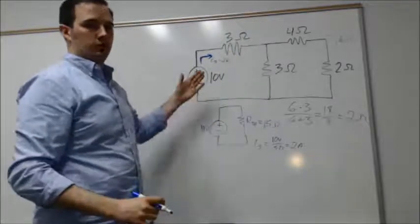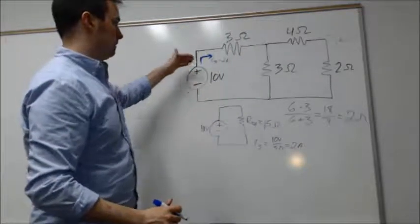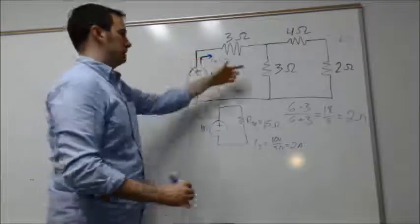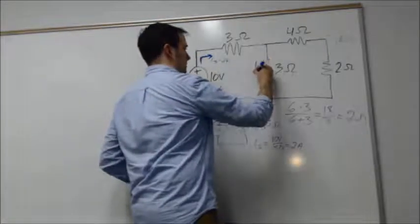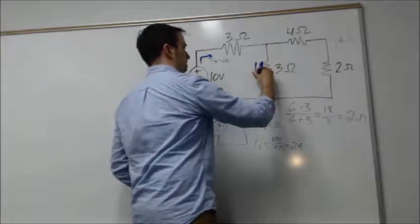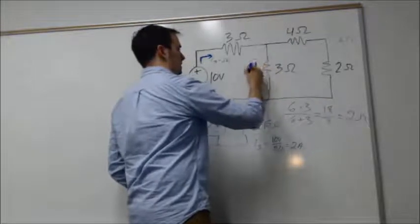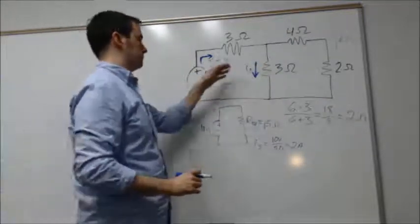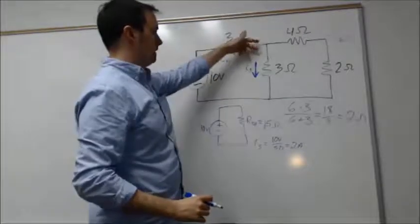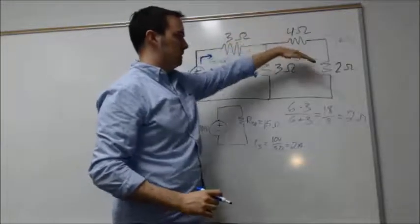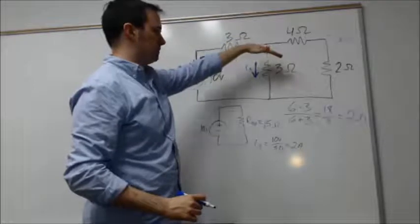So now that we have the total current, we've solved the circuit for the total current. Now let's say I want to know what the current is specifically through this branch, which I'll call I_3, the 3 ohm branch. The 2 amps coming through will split off based on the resistances of each of the given branches.